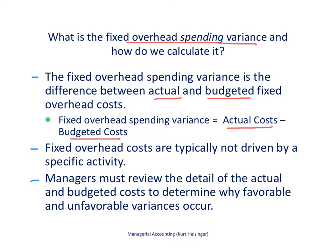If the actual costs are higher than the budgeted costs, it is an unfavorable variance. If the actual costs are lower than the budgeted costs, it is a favorable variance. Fixed overhead costs are typically not driven by a specific activity — this is different from the direct materials, direct labor, and variable manufacturing overhead variances, which are usually driven by some specific level of activity. Managers have to review the detail of actual and budgeted costs to find out why there is a difference, which takes real investigation to figure out why those actual costs are higher or lower than expected.